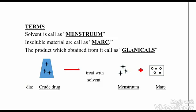In this diagram, the rectangle shape represents the crude drug, and the stars represent the active constituents present in the inner part of the crude drug. When treated with a solvent, we get the menstruum or extract. The dots that remain in the left part represent the marc. So students, the process of taking the active constituent out is called extraction.